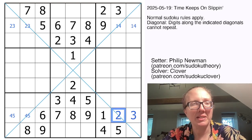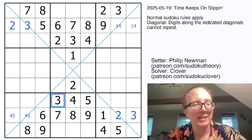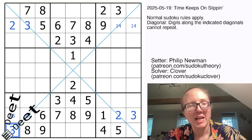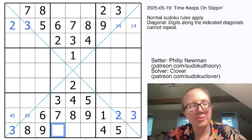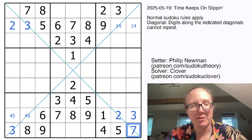And because of the diagonal constraint, this can no longer be a 2, so that's going to be a 3 with a 2. I have a 3 right here. That means 3 can't go in any of these cells, so 3 has to go there. And these are going to be 1, 2, and 6, so this has to be a 7 to finish the row.